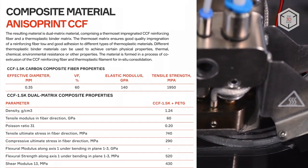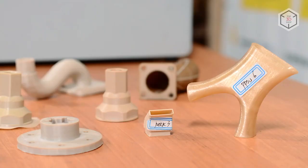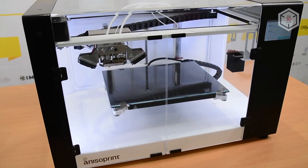Objects printed on the Composer A4 demonstrate significantly higher strength than identical models printed using PEEK or ULTEM materials. Such results are achieved thanks to straightness and continuity of the fibers, adequate proportions, and a large amount of carbon fiber in the finished product, up to 30%.